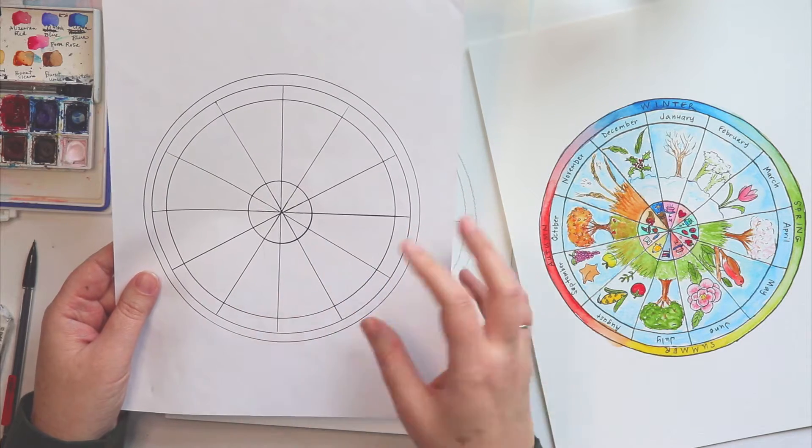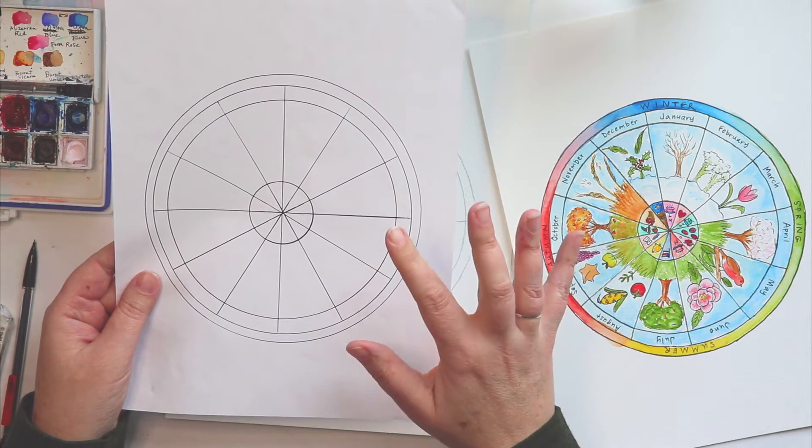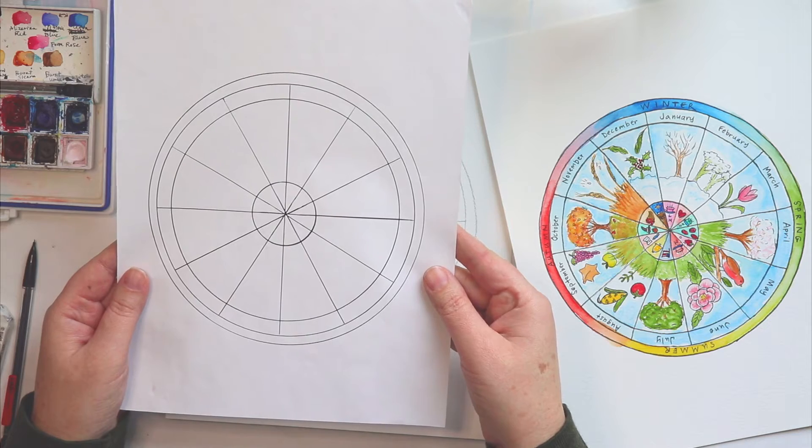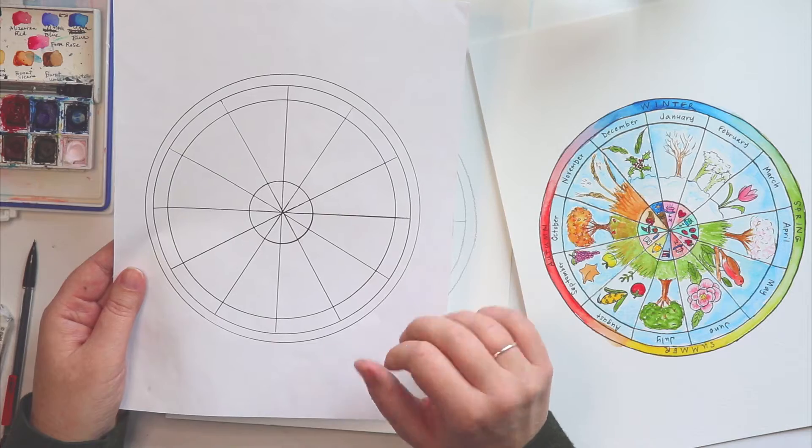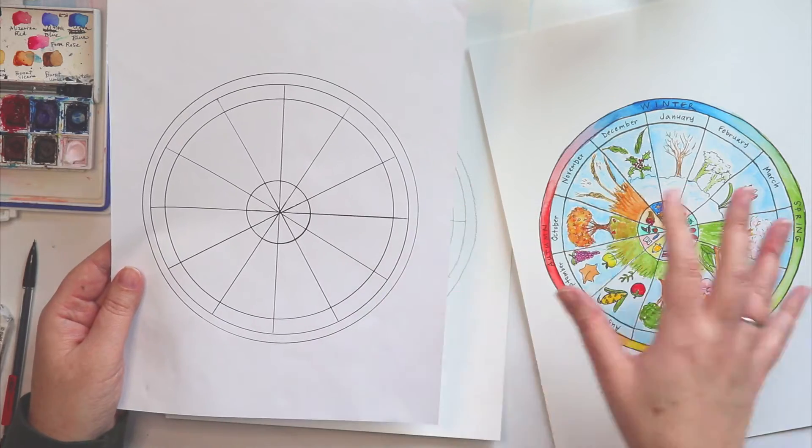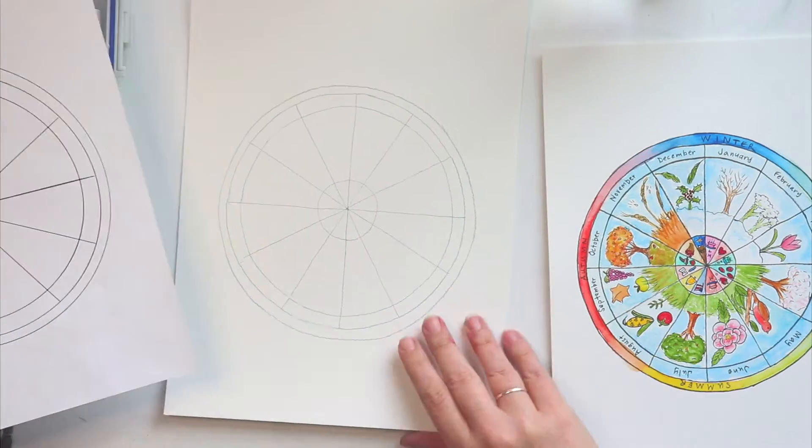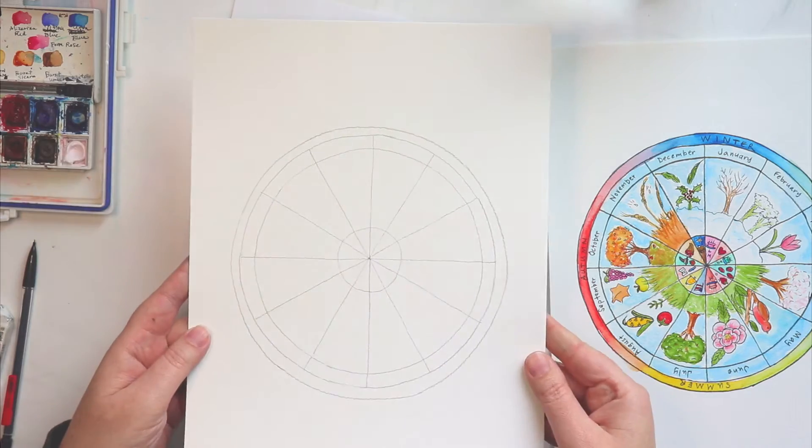All you need to do is download that. If you've got smaller children, I would recommend printing this out on cardstock paper and then they can just draw and paint right onto that paper. Or if you want to get a little more fancy like I have here, you can just trace it onto watercolor paper.